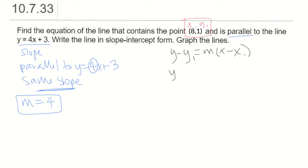That would be y minus y1 is 1 equals m. Our parallel slope is 4, so m is 4 times x minus x1 is 8.